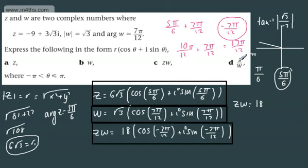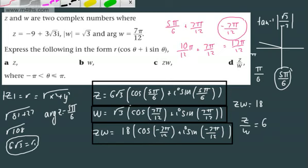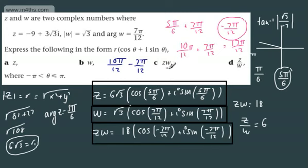What we're now going to do then is the z/w example. So when we're dividing, we divide the moduli and we subtract the argument. So when we get z/w, we know now that z has a modulus of 6√3, w has a modulus of √3. So that means we're going to have 6√3 divided by √3, which is just 6. Then we need to subtract these. So switching this back up, we're going to have 10π/12, and then we're going to minus the 7π/12, and that's going to give us 3π/12, which we can write as π/4.